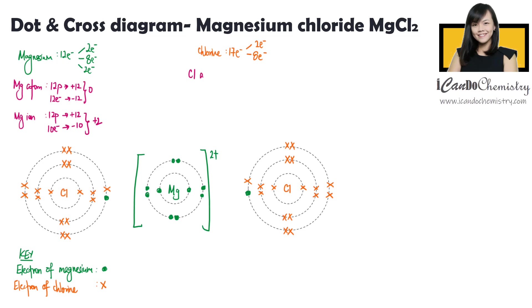For chlorine, the atom has 17 protons, which gives it a charge of +17, and 17 electrons, which gives it a charge of -17. The overall charge of this atom is zero.